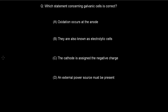The first question says: which statement concerning galvanic cells is correct? A. Oxidation occurs at the anode. B. They're also known as electrolytic cells. C. The cathode is assigned the negative charge. D. An external power source must be present. Pause the video and attempt the question.